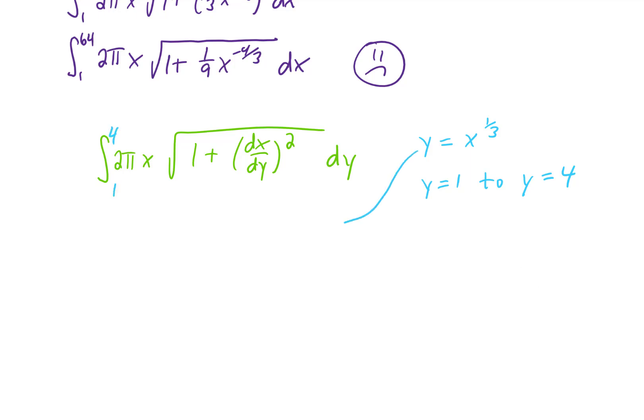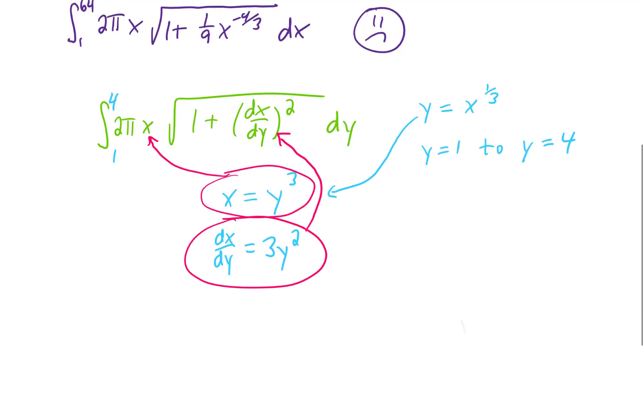However, what we need to do is first solve this equation for x. If we cube both sides, we get x equals y cubed. Taking a derivative of x with respect to y then gives us 3y squared. And if we plug x equals y cubed in for x right here, and if we plug dx dy into our formula up here, let's see how this integral looks.